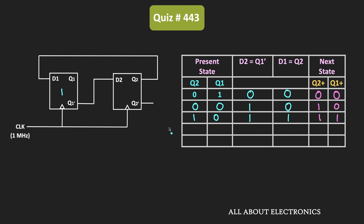Now Q2=1, Q1=1 is the present state of the two flip-flops. Since Q1 is equal to 1, D2 will become 0. D1 is the same as Q2, so D1 will be 1. For the next clock pulse, the inputs for the two flip-flops are 0 and 1, and therefore its output will also be equal to 0 and 1. This present state of 0 and 1 gives inputs of 0 and 0, so the outputs of the two flip-flops will be 0 and 0 in the next state — returning to the beginning.